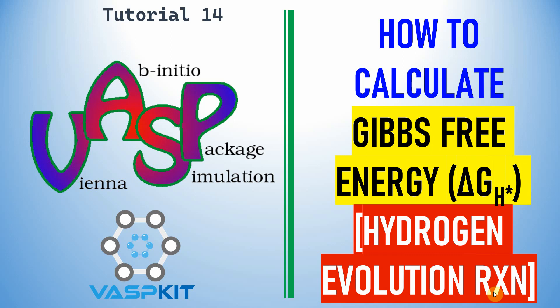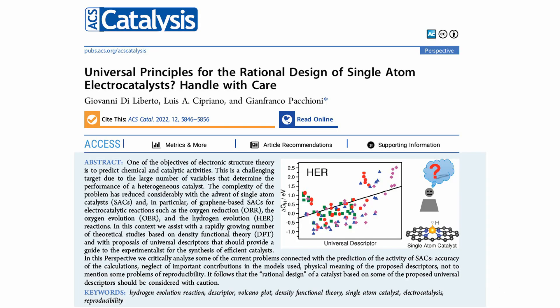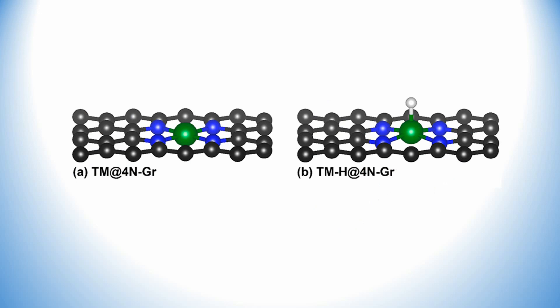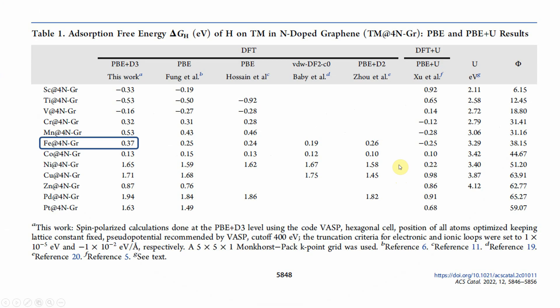Dear friend, this is tutorial 14. In this video you can learn how to calculate Gibbs free energy for hydrogen evolution reactions. This is based on a paper published in ACS Catalysis, where they calculated delta GH. I used similar models to also calculate delta GH. The first model is the catalyst without H, and the second is the hydrogen-adsorbed system — they calculated the adsorption free energy delta GH.